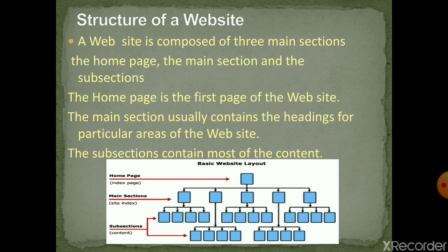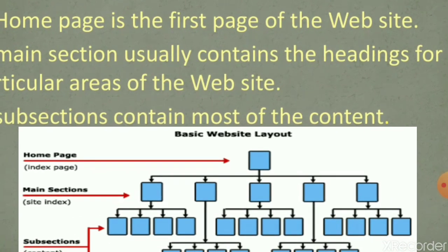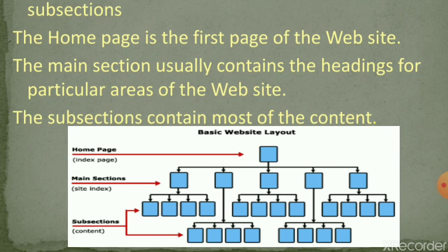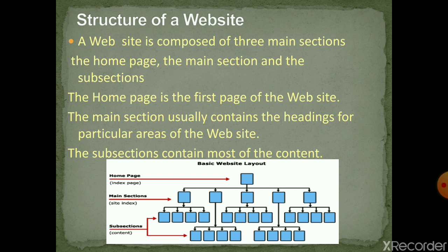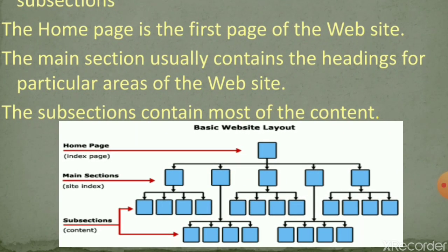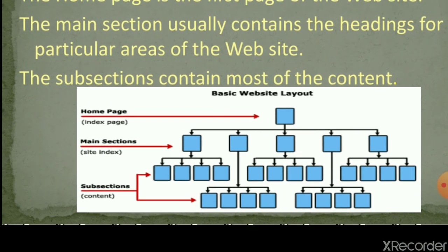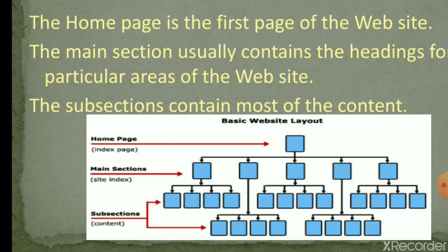A website is composed of three main sections: the home page, the main sections, and the sub-sections. The home page is the first page of the website. The main sections usually contain the headings for particular areas of the website. Finally, the sub-sections contain most of the content. The home page is also called the index page, and the sub-sections hold the maximum content.